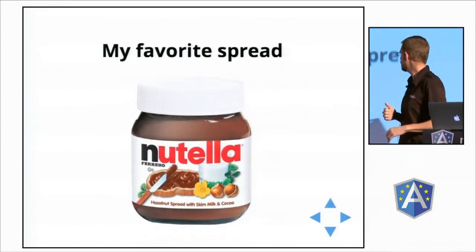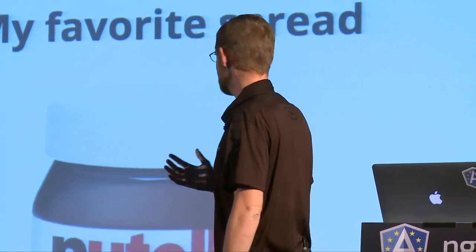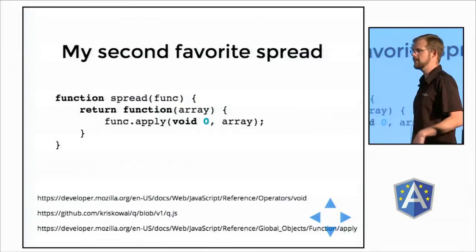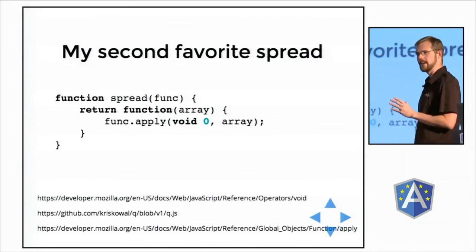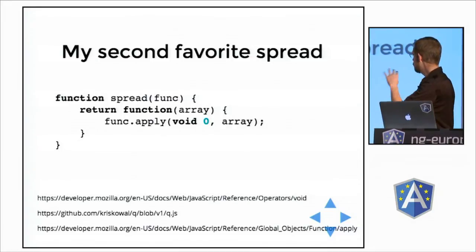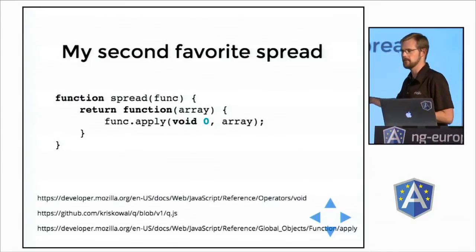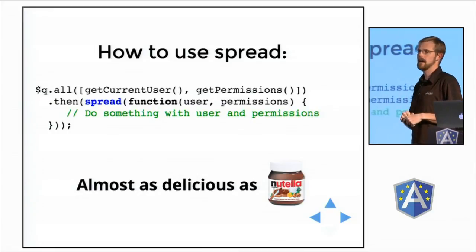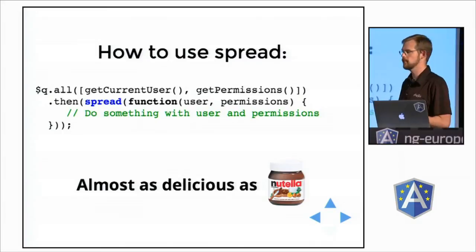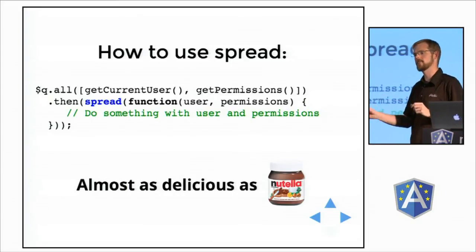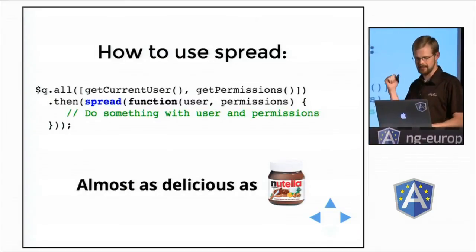But this can be even cooler. My favorite spread is Nutella — I love it here more than anywhere else, it's delicious. But my second favorite kind of spread is the function spread. What it does is make the all syntax even a little cooler. Rather than getting back a responses array, you get back positional arguments for each element in that array. So it's cleaner — you don't have to index into the array. You call spread, and it takes that array and applies the arguments as function arguments to your callback. Super cool, and almost as delicious as the best spread.